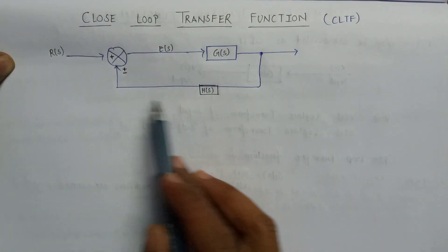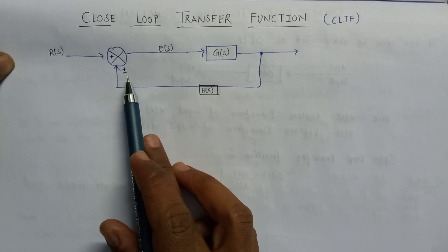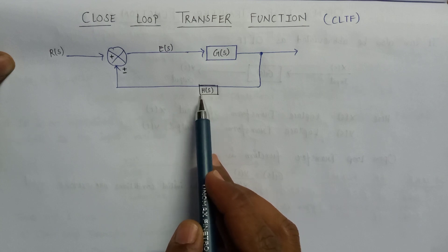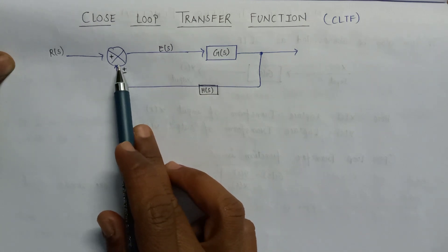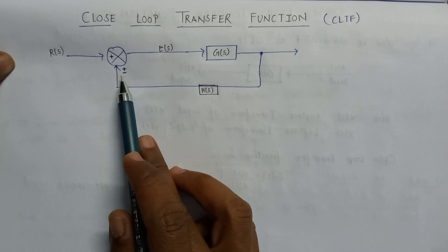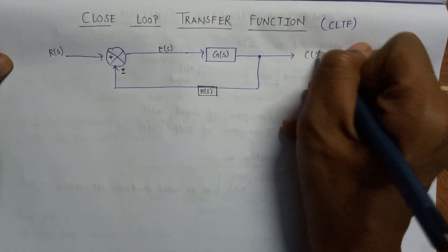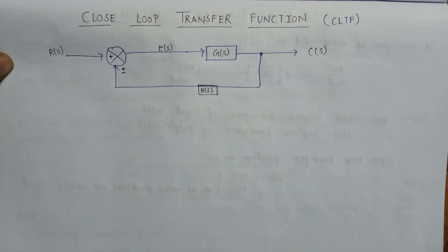If it is connected with positive polarity then it will be considered as a case of positive feedback, but if the feedback path gain is connected to the summer with negative polarity then it will be considered as negative feedback. Here C is the output of this control system.